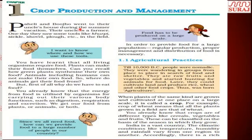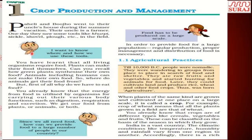The lesson starts with Paheli and Bujo, who went to their uncle's house during the summer vacation. Their uncle is a farmer. One day they saw some tools like khorpi, sickle, shovel, and plough in the field. Paheli and Bujo are two friends in your NCERT book. Bujo is very curious and always asks questions.